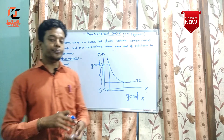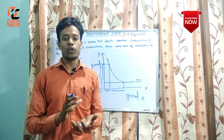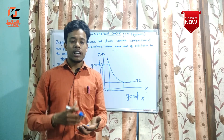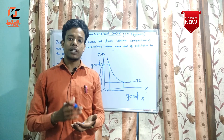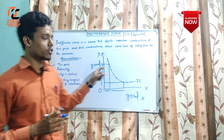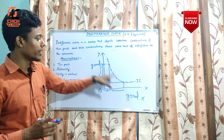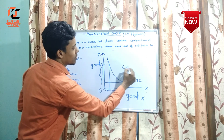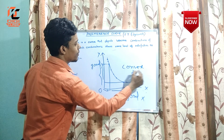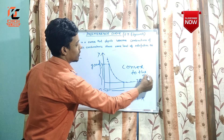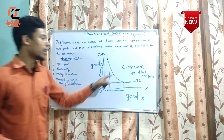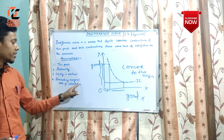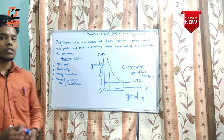The indifference curve shows combinations of two goods through which the consumer achieves the same level of satisfaction, whether the combination is in the upper or lower section of the curve. It is important to notice that the curve is convex to the origin, because of the diminishing marginal rate of substitution.